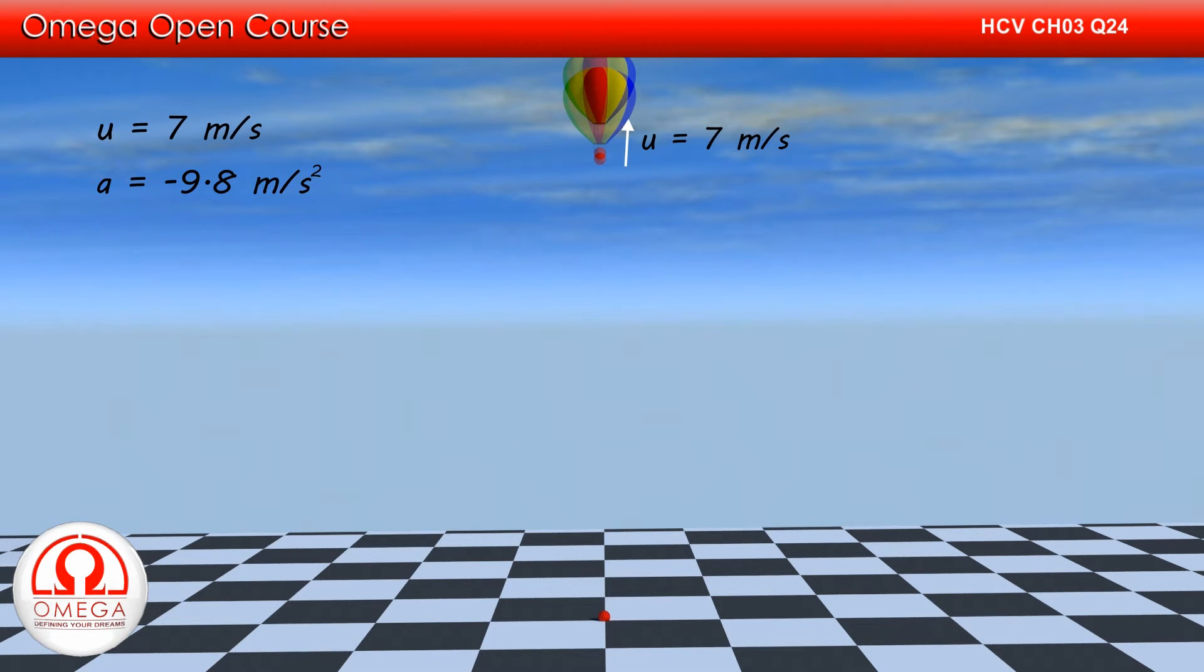As the acceleration due to gravity is in downward direction, acceleration is minus 9.8 meters per second squared. The final displacement of the ball is 60 meters in downward direction. Therefore, final displacement is equal to minus 60 meters.